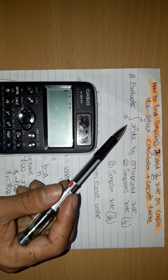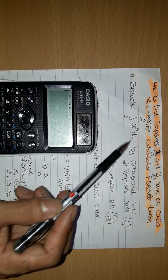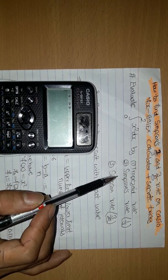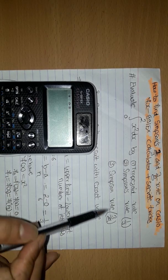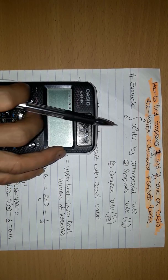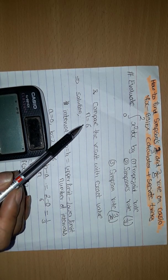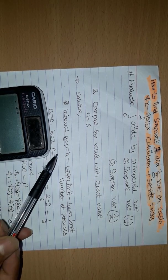Evaluate integration 0 lower limit upper limit 2, X squared DX by 1 trapeze rule, 2 Simpson rule 1 by 3rd, 3 Simpson rule 3 by 8, and compare the result with exact value. N is equal to 6. Solution.